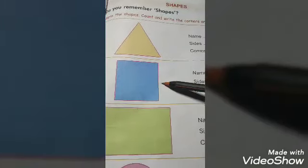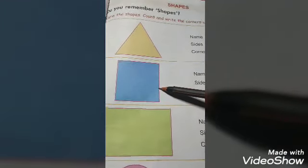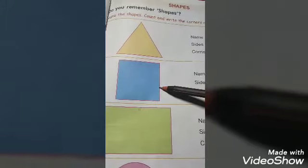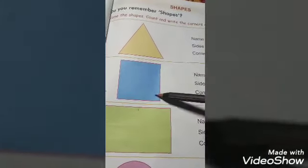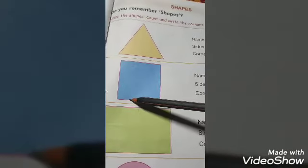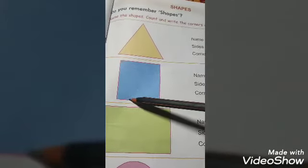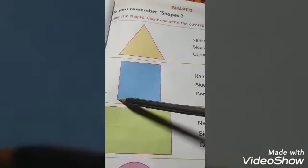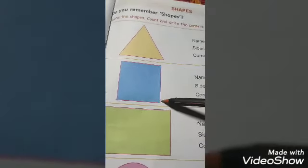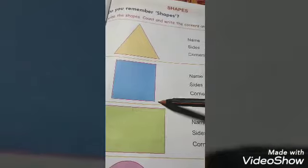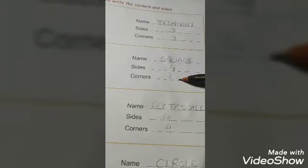Next, this is a square. There are four sides in a square — 1, 2, 3, and 4. And there are four corners — 1, 2, 3, 4. There are four corners in a square. We will write here: Square. Sides 4 and corners 4.